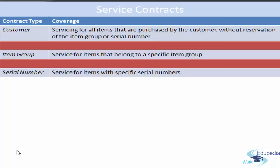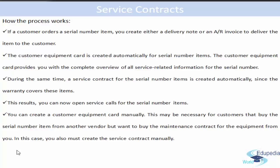You can enter a service contract manually or base it on a predefined contract template. Service contracts can also be created automatically when a serial number item is delivered to the customer. Here is how the process works: if a customer orders a serial number item, you create either a delivery note or AR invoice to deliver the item. The Customer Equipment Card is created automatically for serial number items, and at the same time a service contract is created automatically since the warranty covers these items. You can then open service calls for serial number items. You can also create Customer Equipment Cards manually — this may be necessary for customers who buy a serial number item from another vendor but want to buy the maintenance contract from your company, in which case you must also create the service contract manually.